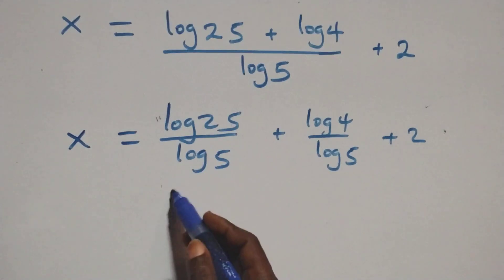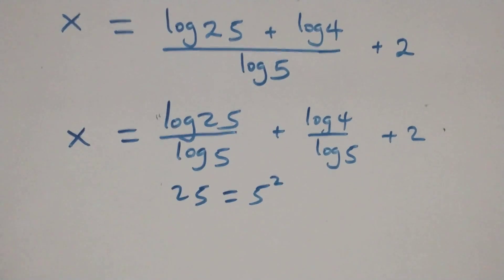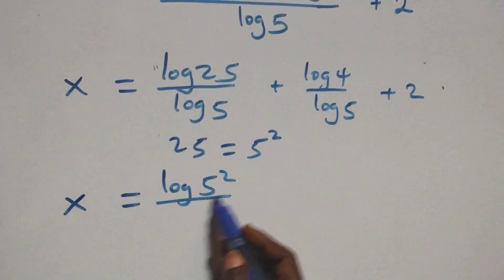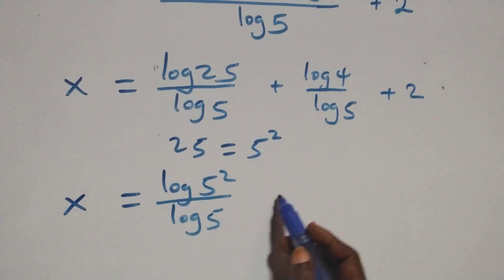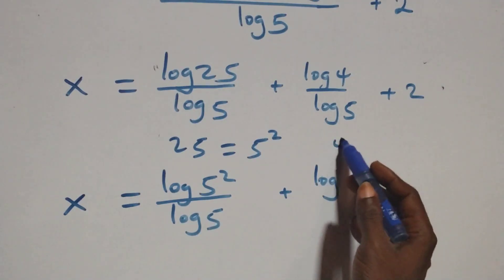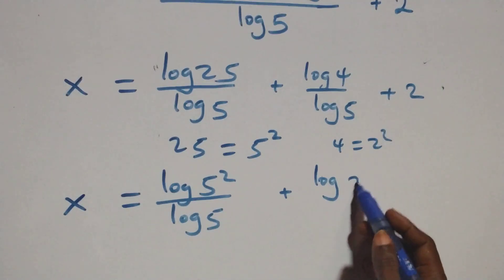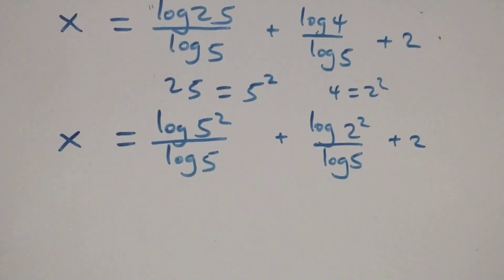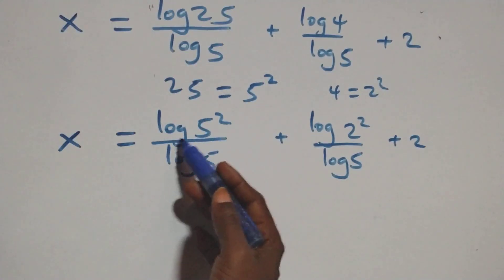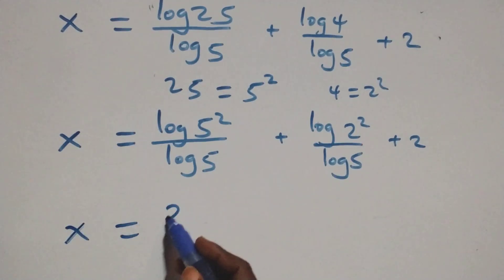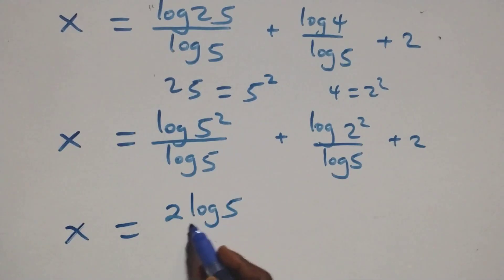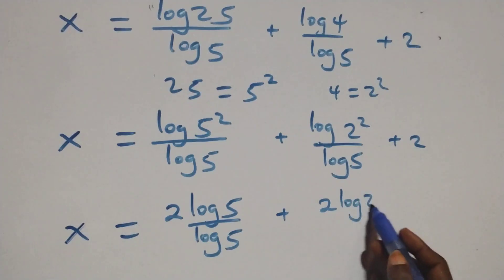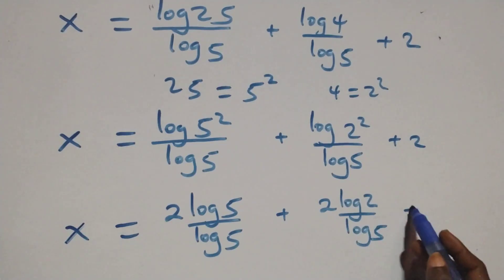Now 25 can be written as 5 times 5, that's 5 squared. So we have x equals log 5 squared over log 5 plus log 4 over log 5 plus 2. And 4 is 2 times 2, which is 2 squared. So we have log 2 squared over log 5 plus 2. Applying the power rule: x equals 2 log 5 over log 5 plus 2 log 2 over log 5 plus 2.